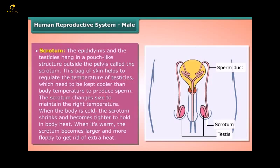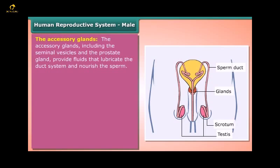The scrotum: The epididymis and the testicles hang in a pouch-like structure outside the pelvis called the scrotum. This bag of skin helps regulate the temperature of the testicles, which need to be kept cooler than body temperature to produce sperm. When the body is cold, the scrotum shrinks and becomes tighter to hold in body heat; when it is warm, the scrotum becomes larger and more floppy to get rid of extra heat.